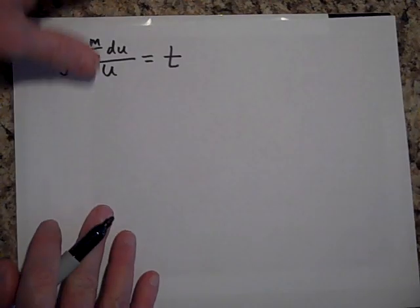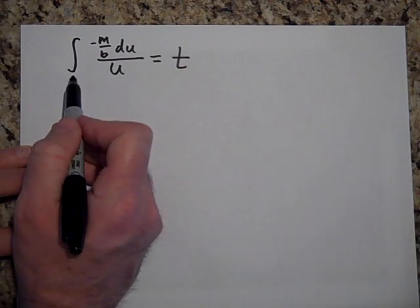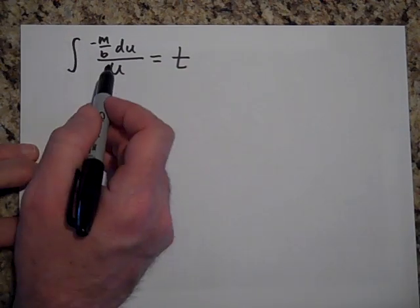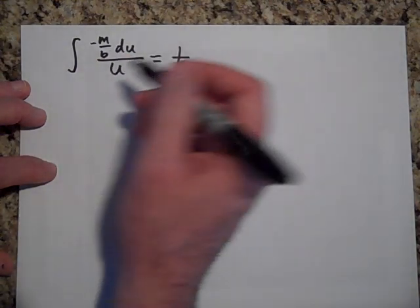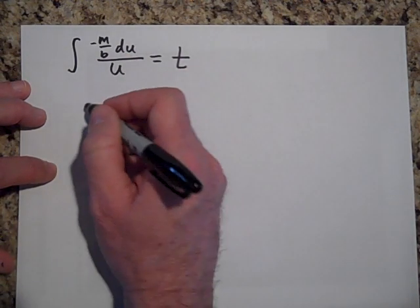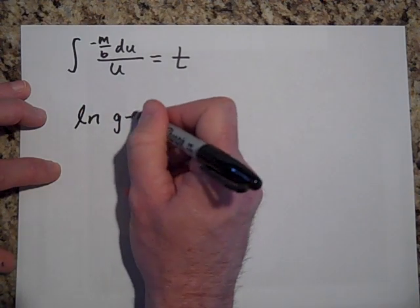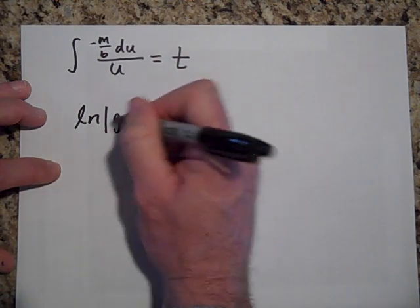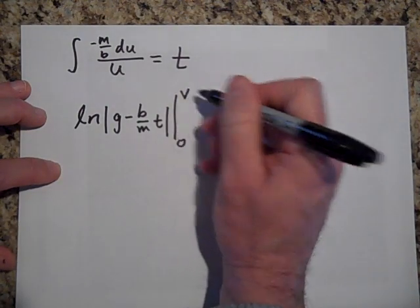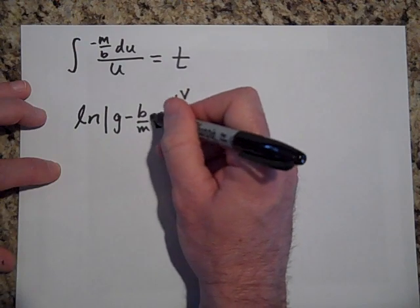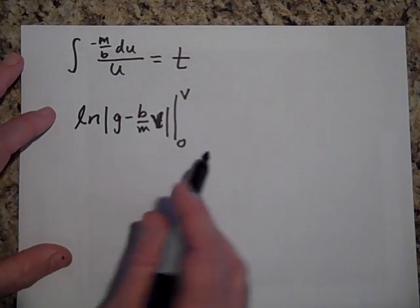I should put my limits in terms of u and not v, but I'm going to switch back when I'm done anyway. So I'll go ahead and take this integral. The integral is the natural log of u, which is the natural log of this expression. We integrate from zero to v — that's what u is — and that equals t.